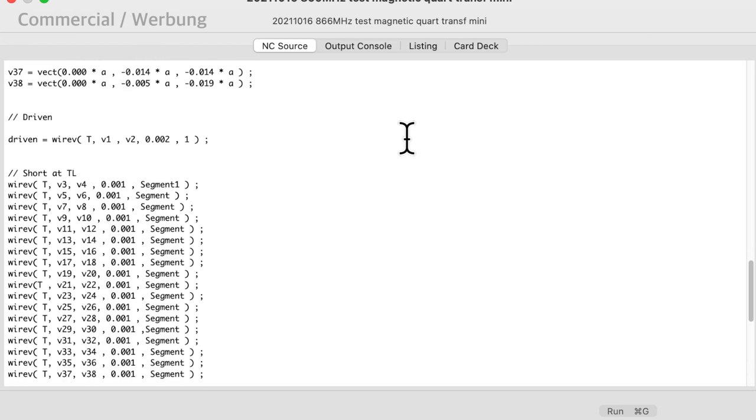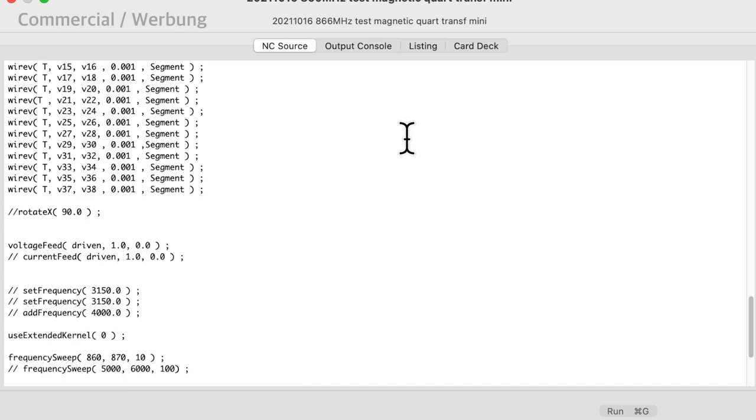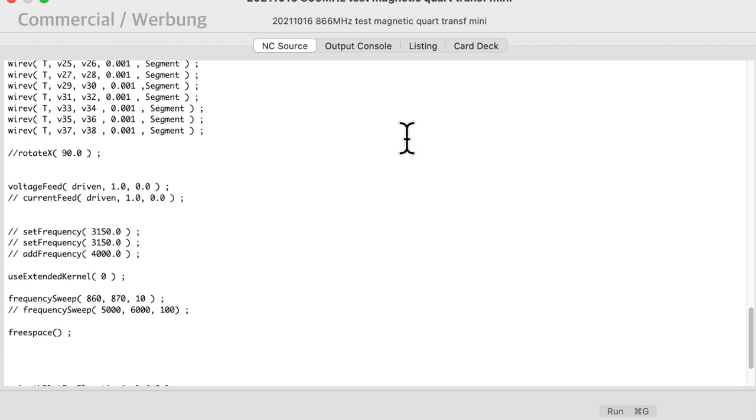In the case of our magnetic loop antenna, this is particularly complicated, because we have to approximate the ring with straight wires. On the bottom, we have the frequency sweep command that computes 10 frequencies between 860 and 870 MHz. Let's see, just very briefly, what else we have.